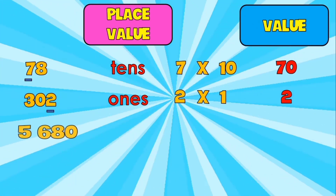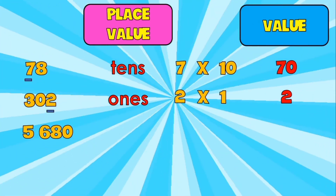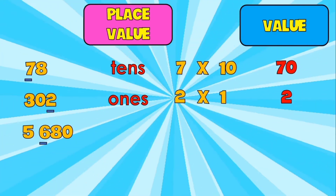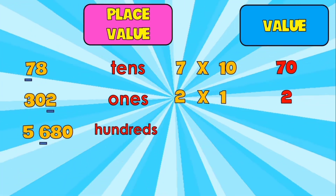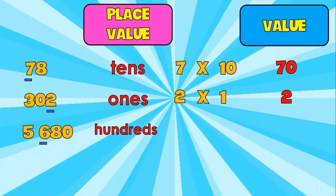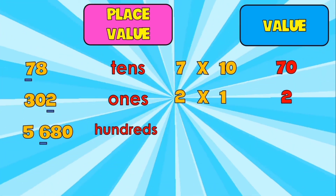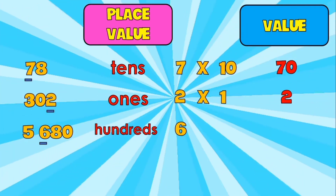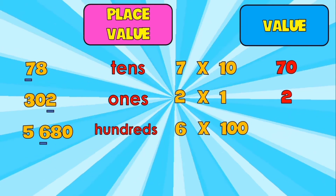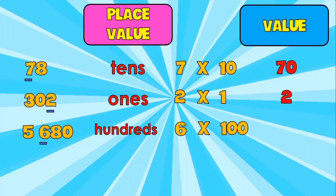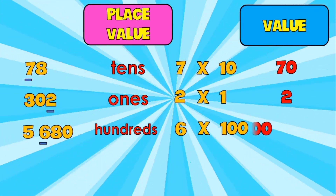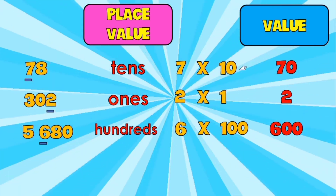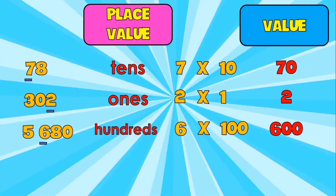Next number: 5,680. What is the place value of 6? It's hundreds. And what is the value of 6? Let's get 6 and multiply it by 100 since it's in hundreds place. 6 times 100 is 600. So, the place value of 6 is hundreds and the value of 6 is 600.